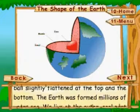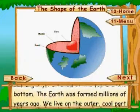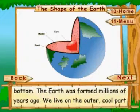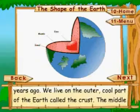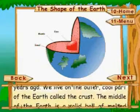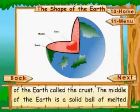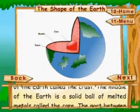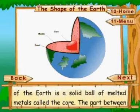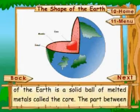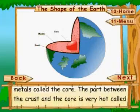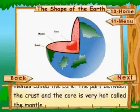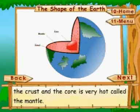The earth was formed millions of years ago. We live on the outer, cool part of the earth called the crust. The middle of the earth is a solid ball of melted metals called the core. The part between the crust and the core is very hot, called the mantle.